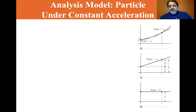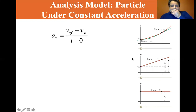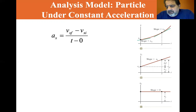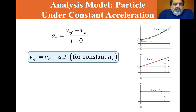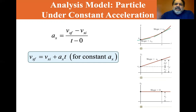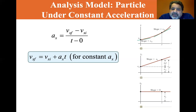Now let's look at some of these equations. Acceleration is equal to vx-final minus vx-initial divided by delta-t. We're going to assume that t-initial is zero, so we can just say t minus zero. If we solve for vx-final, we get: vx-final equals vx-initial plus acceleration times t — for constant acceleration only. That's saying the final velocity equals the velocity you start with, plus any acceleration times the time that acceleration has been in effect.